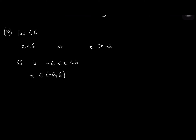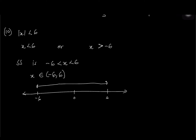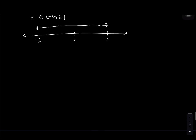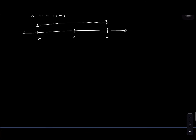On the number line for question 10, place negative 6, 0, and 6. Use parentheses because it's a strict inequality with no equal-to sign.